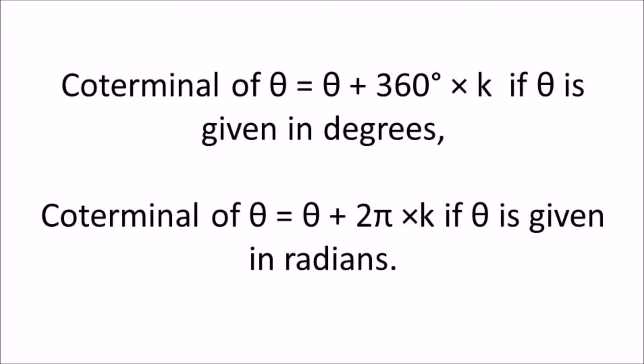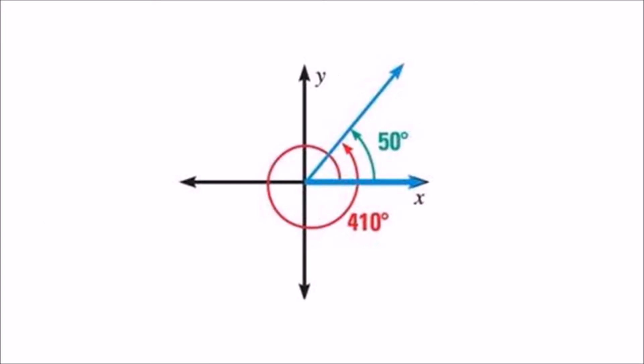We can find the coterminal angles of a given angle by using the following formula. In the figure shown, 50 degrees and 410 degrees are coterminal angles because the difference between them is a multiple of 360. However, if the measurement of an angle is in radians, it should be a multiple of 2 pi.